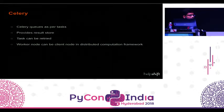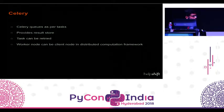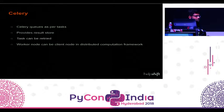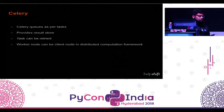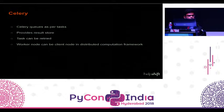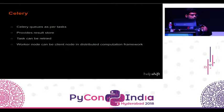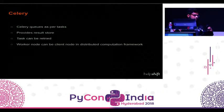Other advantages of using Celery: we can use Celery queues per task, the results store is built in, tasks can be retried, and a Celery worker can also act as a client node in a distributed computation framework. For example, if we want to build a model using Spark, one Celery worker can act as a client node, submit the task to Spark to build the model, and then take over once the model is built.